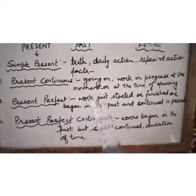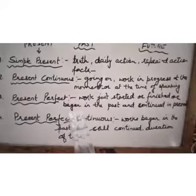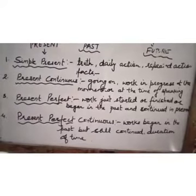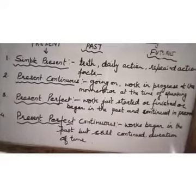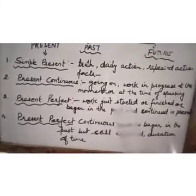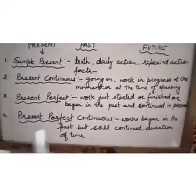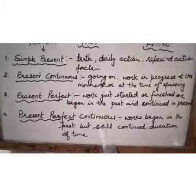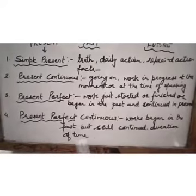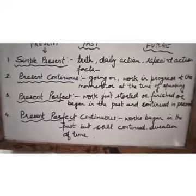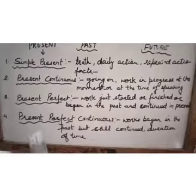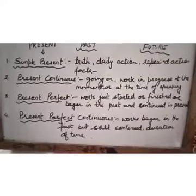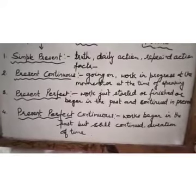Present perfect refers to work which you have just started or finished, or work that began in the past and is still relevant in the present. For example: 'I have just eaten my lunch,' 'I have just written my essay,' 'I have just finished my homework.' Present perfect continuous refers to work which began in the past but is still continuing, and it shows duration of time — for example, 'for one hour' or 'since three o'clock.' Like: 'We have been taking our classes for three hours' — meaning it has not completed yet.